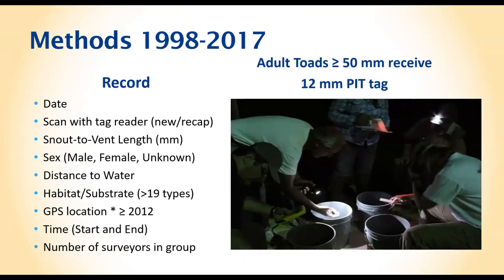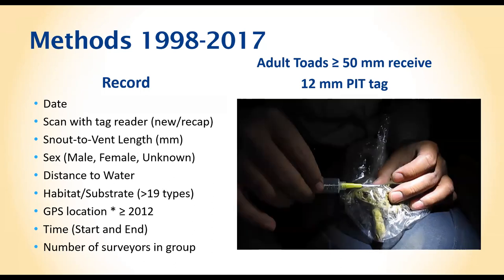During surveys, a pit tag about an inch long is inserted into the body of the animal. Measurements include snout-to-vent length, distance to water, habitat type, and GPS location (mostly after 2012 when technology advanced). Survey teams varied from two people to over 20, allowing more animals to be captured. Here at night, a group including private landowner David Spicer helped process the animals.